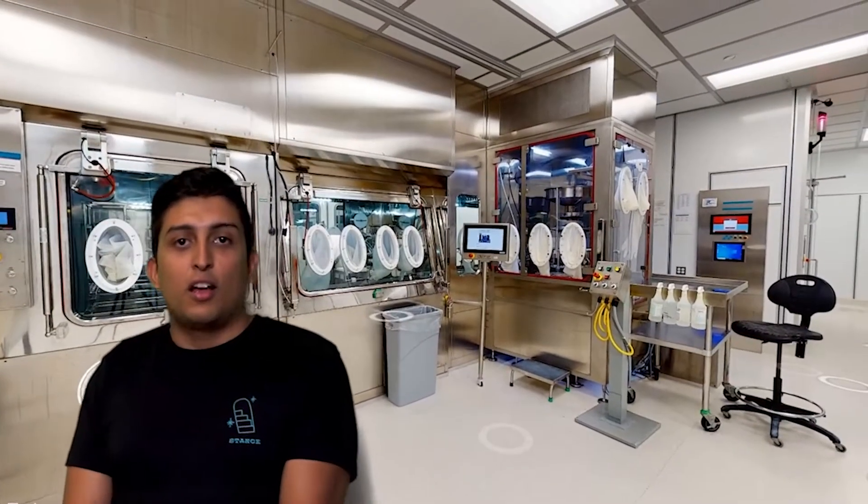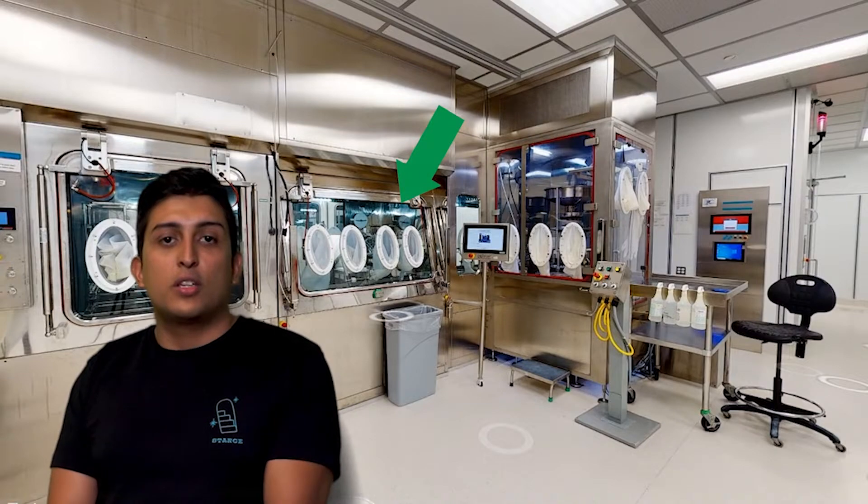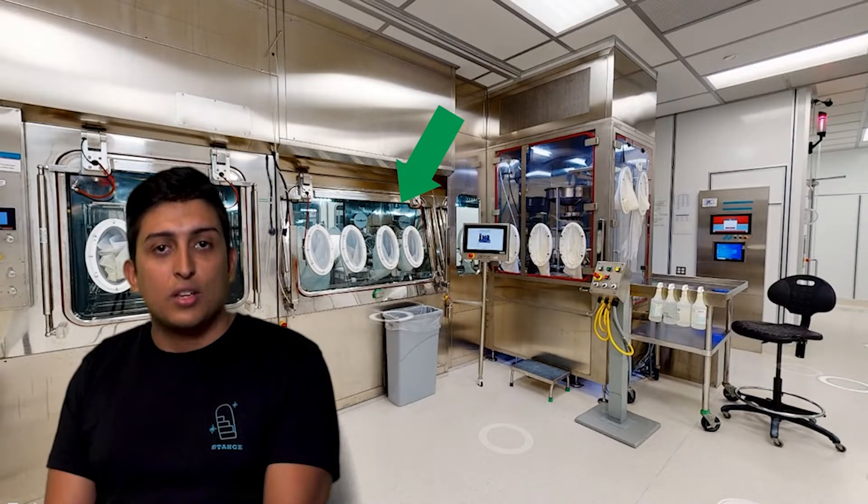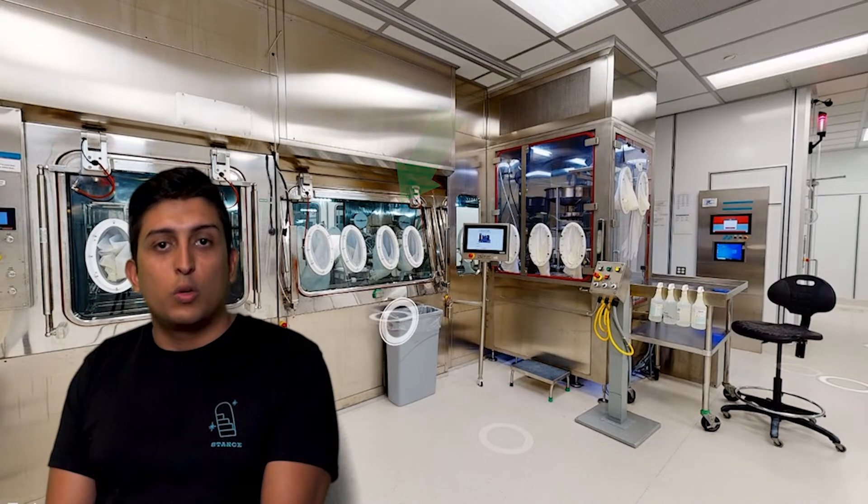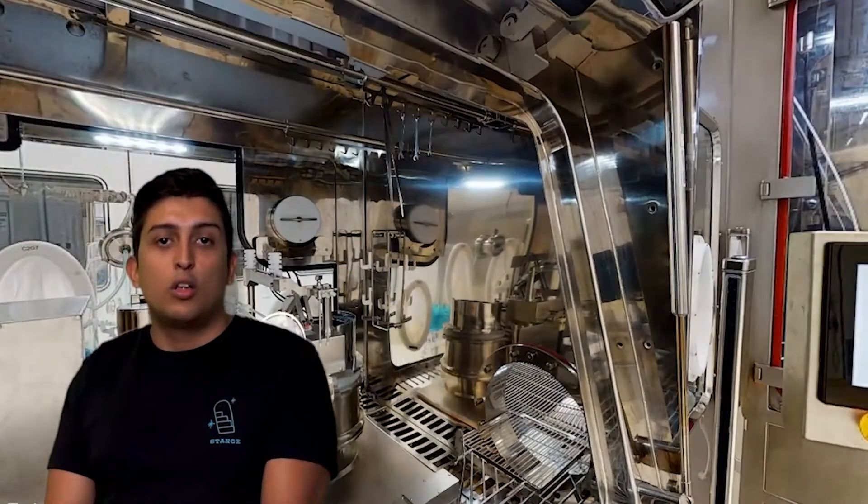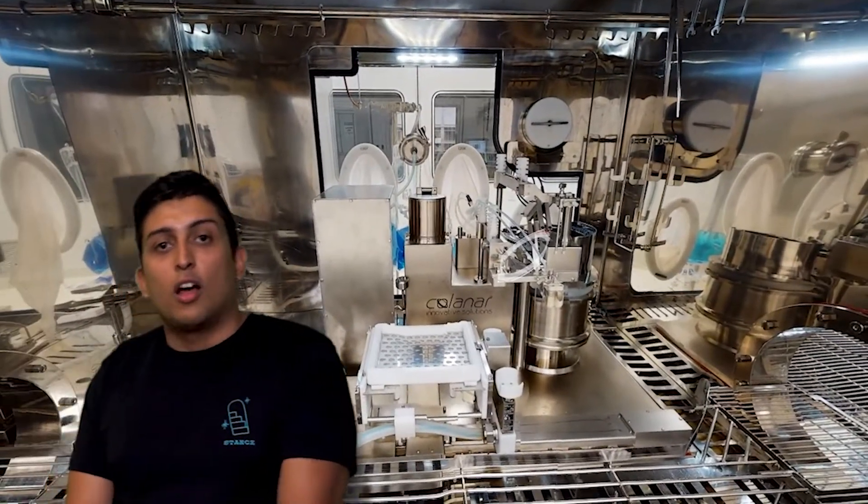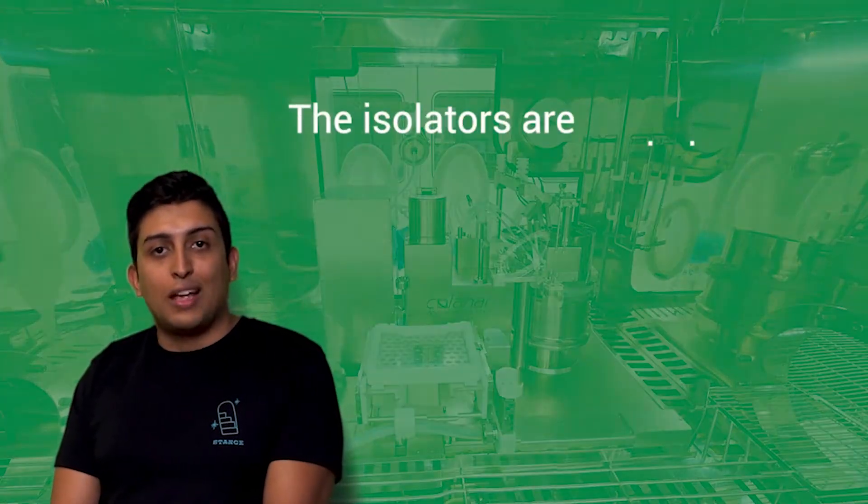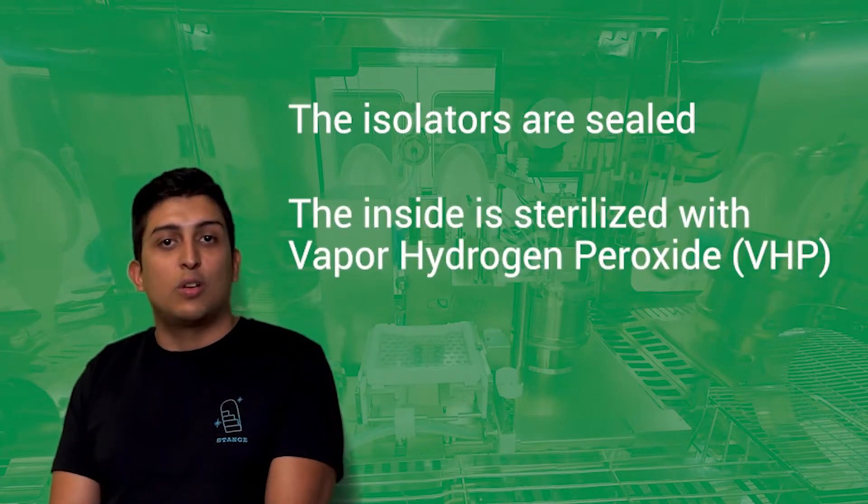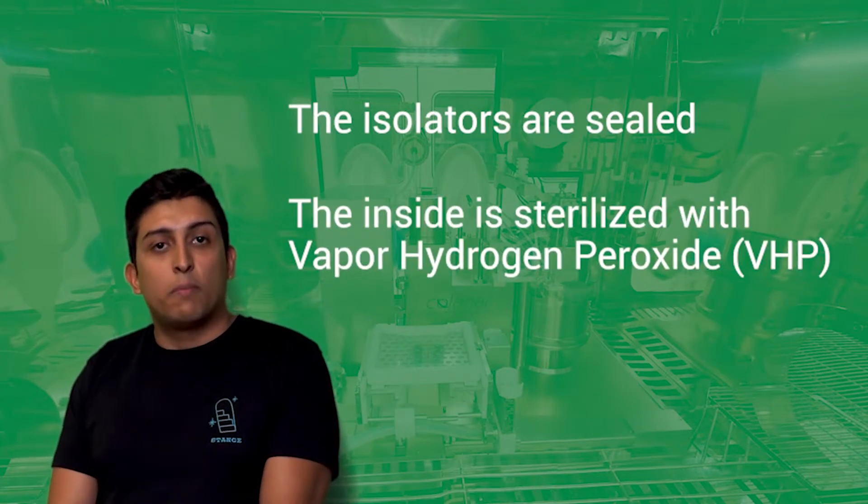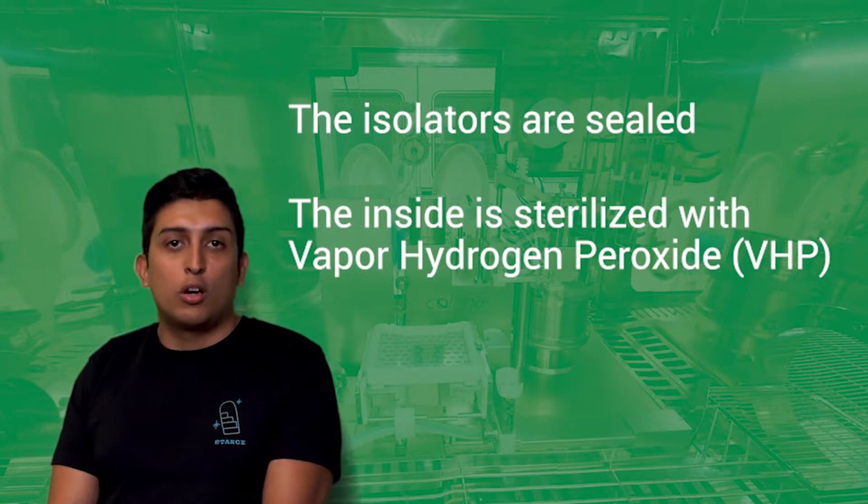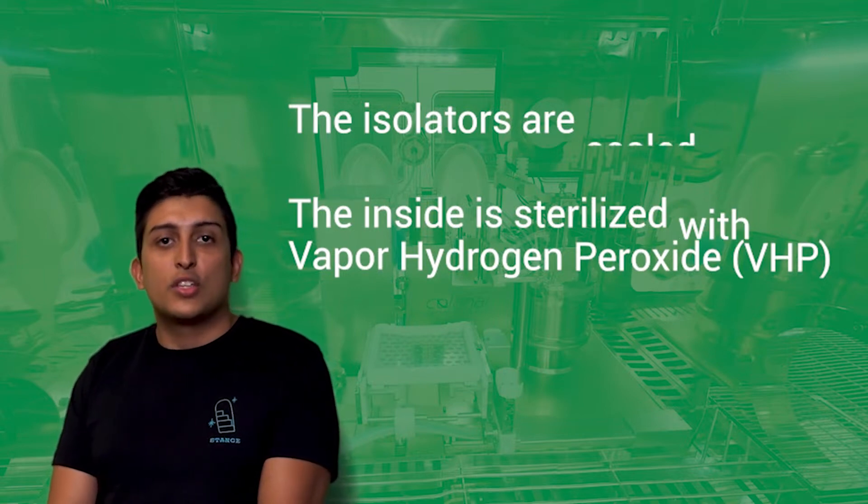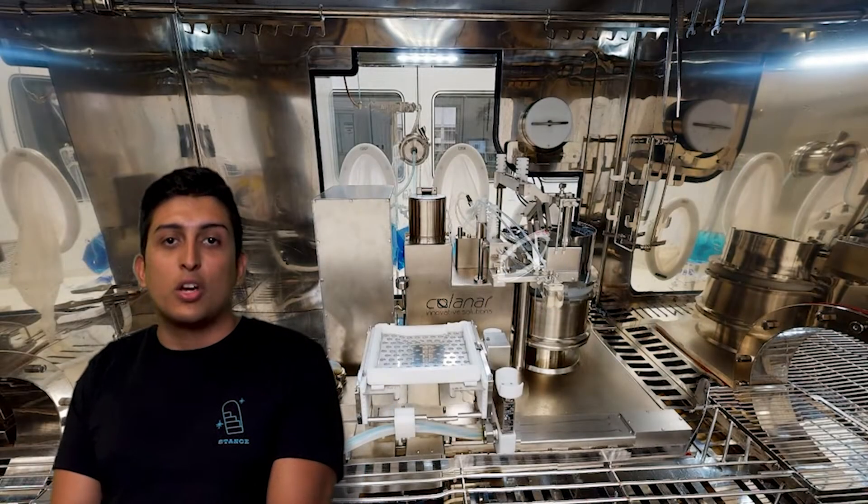All right, here we are. Do you see how there are enclosed spaces surrounded by stainless steel and glass? These are called isolators, which are an advanced pharmaceutical manufacturing technology. The isolators are sealed, and the inside is sterilized by pumping in a high concentration of sanitizing gas, vapor hydrogen peroxide, or VHP. This is the same hydrogen peroxide that you might use to clean wounds, but in the isolator, it exists as a gas in much higher concentration.